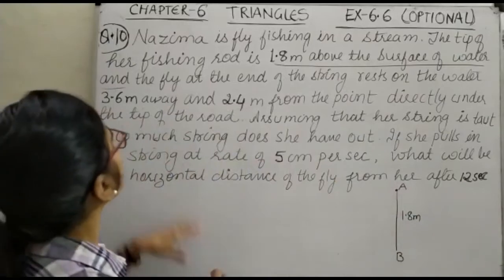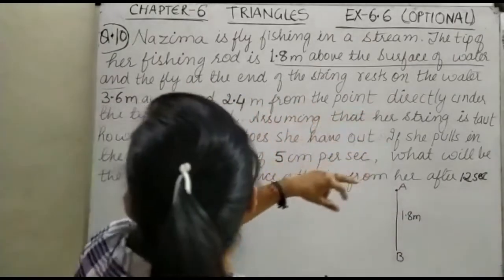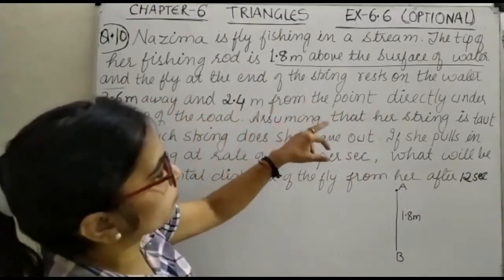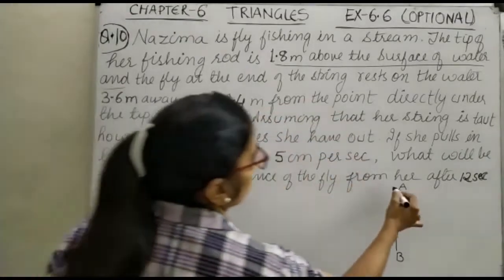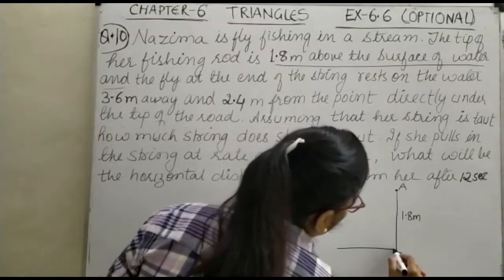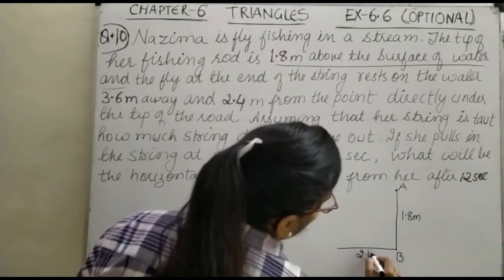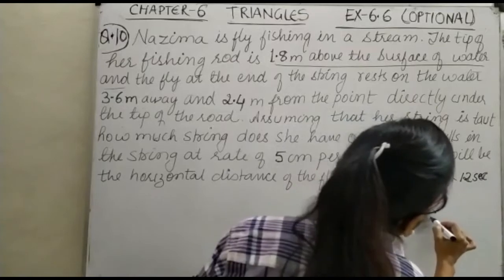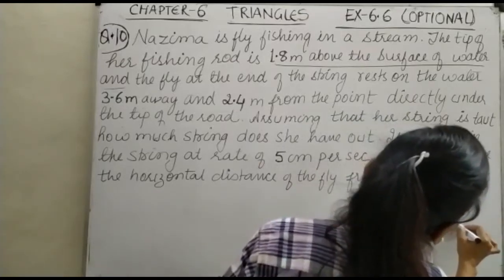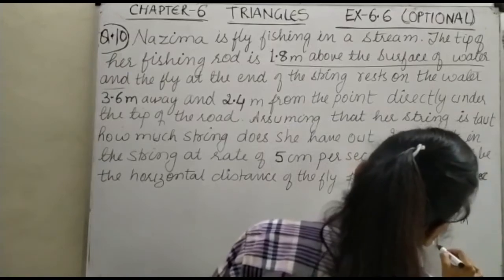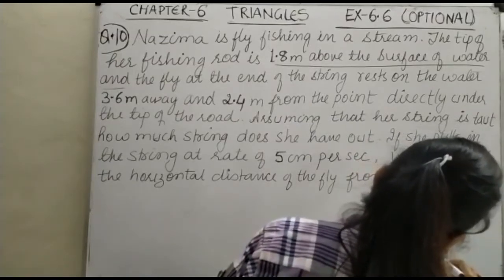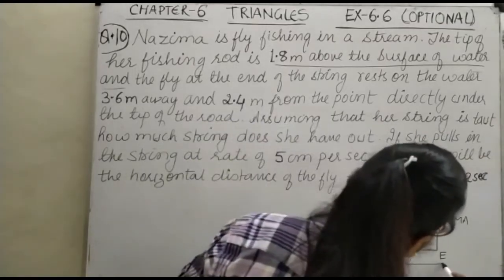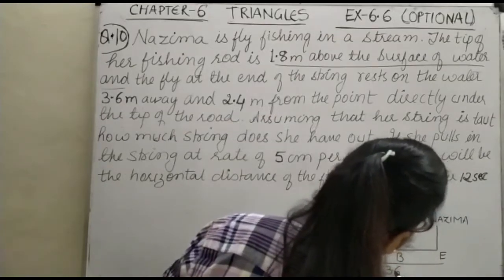Now, the fly at the end of the string rests on the water 3.6 meter away and 2.4 meter from the point directly under the tip of the rod. Then, the tip of the rod is here. This is 2.4 meter. And here, suppose the position of the Nazima, it is here. We can take this point as E.